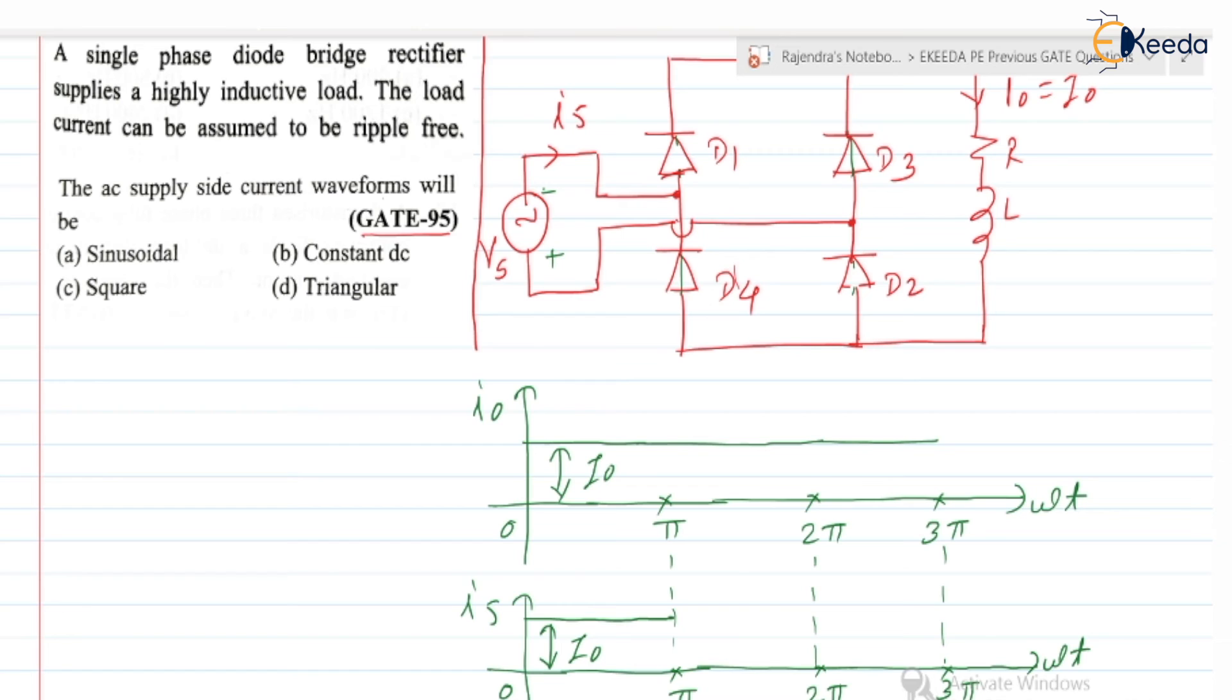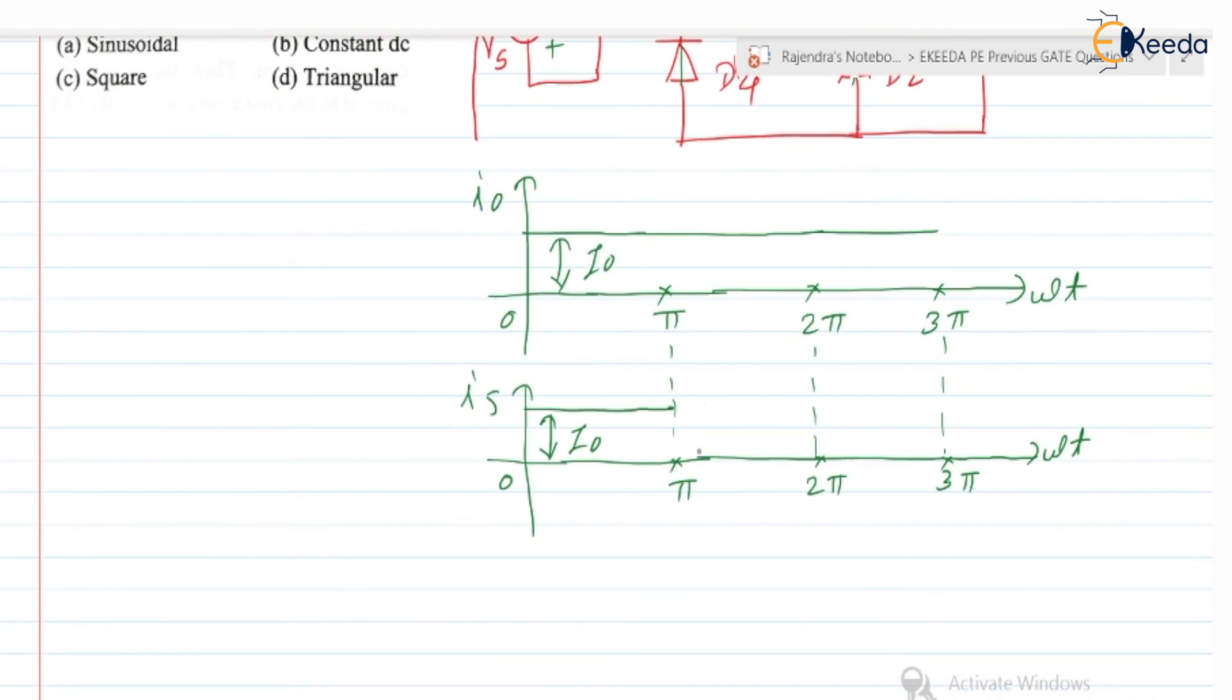But if you check in the source branch, the actual current is flowing in opposite to that of the Is direction. So here can we say that Is is equal to minus I0? Yes, Is is equal to minus I0.